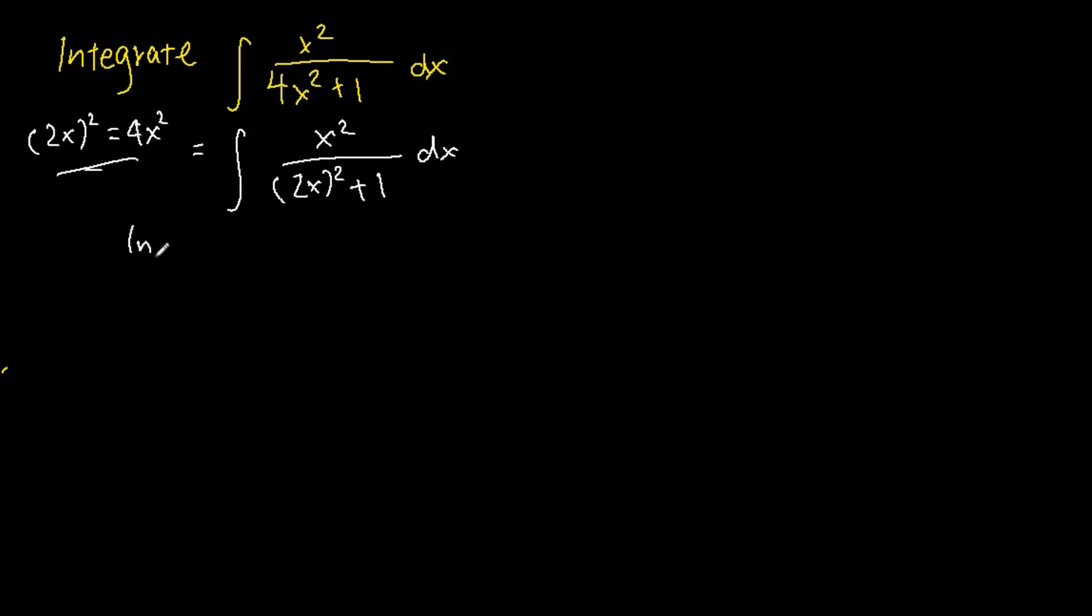Next thing we will do is we will use integration by substitution. We let u be equal to 2x and we differentiate u with respect to x. This gives us 2, in which multiplying both sides by dx, we will get du equals 2 dx.